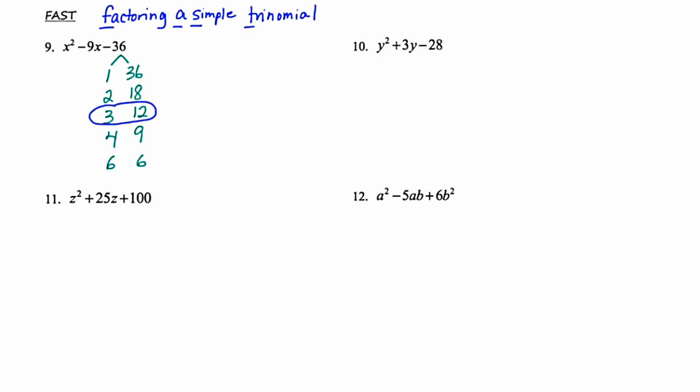Now I'm going to decide on the signs — the pluses and minuses. The product has to be negative 36, which means there has to be one plus and one minus. And I also have to have a sum of negative 9. That means the minus goes with the 12 and the plus goes with the 3. As a double check: 3 and negative 12 give a product of negative 36, and a sum of negative 9. So this is our winning pair.